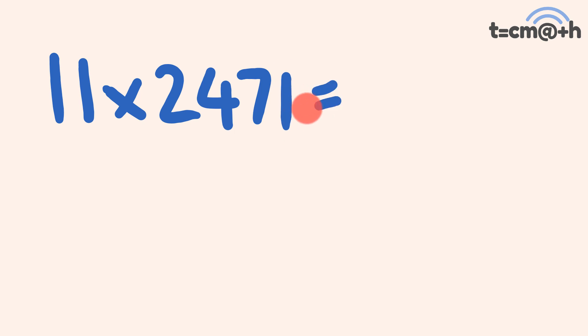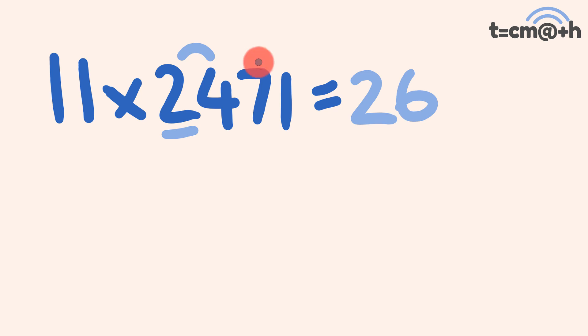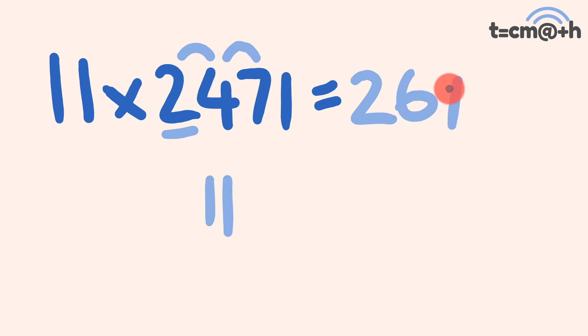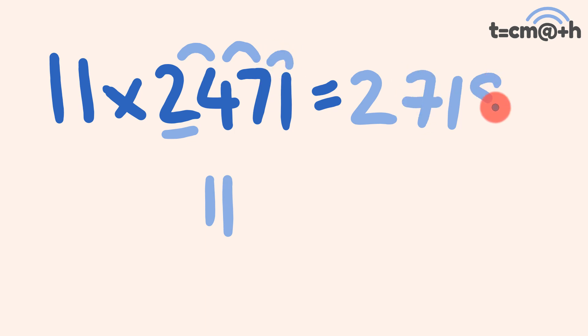What about another one? 11 multiplied by 2471. First digit is 2. The next digit: 2 plus 4 is equal to 6. The next digit: 7 plus 4 is equal to 11. So we put the 1 down and carry the 1 across, so this 6 becomes 7. The next digit: 7 plus 1 is equal to 8. And the last digit is 1. So 11 times 2,471 is equal to 27,181.